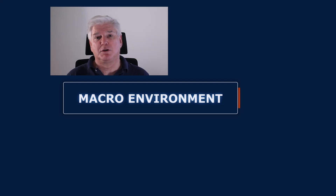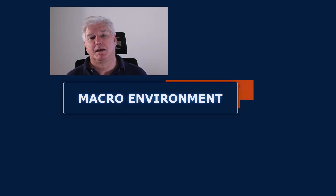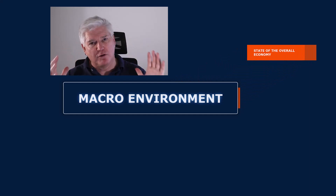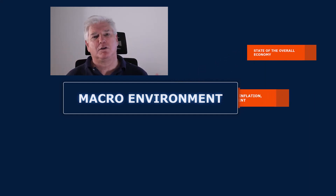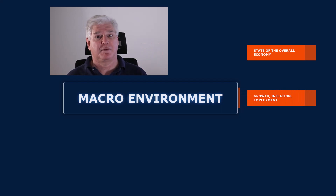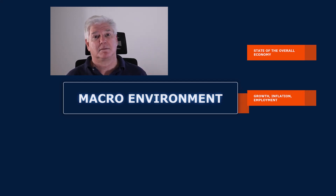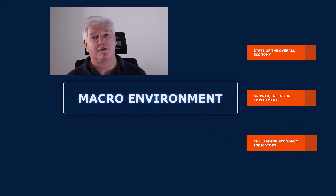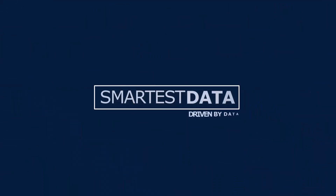In closing, three quick bullet points regarding macro environment. First, it describes the state of the overall economy. Second, it includes factors such as growth, GDP, inflation, price stability, and employment levels. Thus, the leading economic indicators, which we should be looking at closely every month when they're published. Thank you very much.